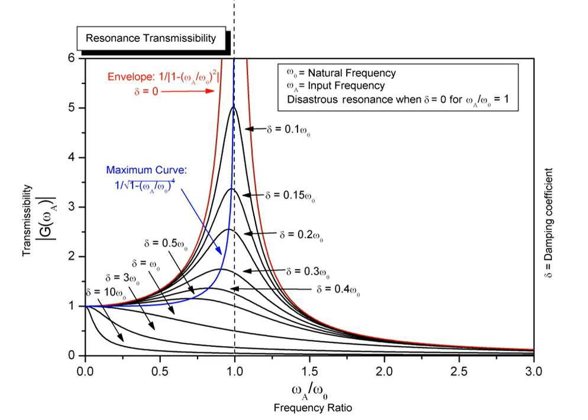Resonance occurs widely in nature and is exploited in many man-made devices. It is the mechanism by which virtually all sinusoidal waves and vibrations are generated. Many sounds we hear, such as when hard objects of metal, glass, or wood are struck, are caused by brief resonant vibrations in the object. Light and other short wavelength electromagnetic radiation is produced by resonance on an atomic scale, such as electrons in atoms.